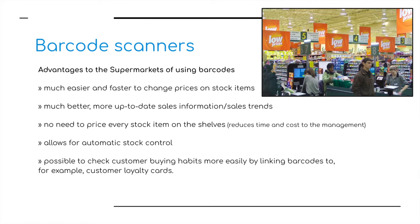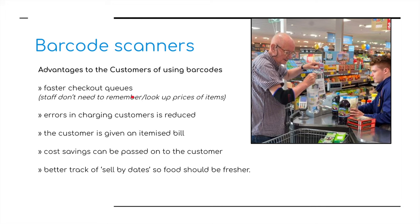The advantages of barcodes for the supermarket include: it is much easier and faster to change prices on stock items; much better and more up-to-date sales information; sales trends can be ascertained; there's no need to price every stock item; it allows for automatic stock control so the warehouse can be contacted when stock is low; and it is possible to check customer buying habits by linking barcodes to customer loyalty cards. Advantages to the customer include: faster checkout queues; reduced charging errors, so more accurate billing; the customer is given an itemised bill; cost savings can be passed on; and better tracking of sell-by dates means food should be fresher.